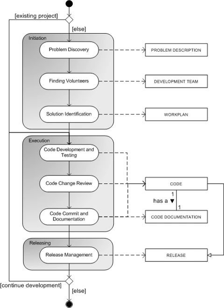Also, in closed-source projects, the development teams must often work under management-related constraints such as deadlines, budgets, etc., that interfere with technical issues of the software. In open-source software development, these issues are solved by integrating the users of the software in the development process, or even letting these users build the system themselves.